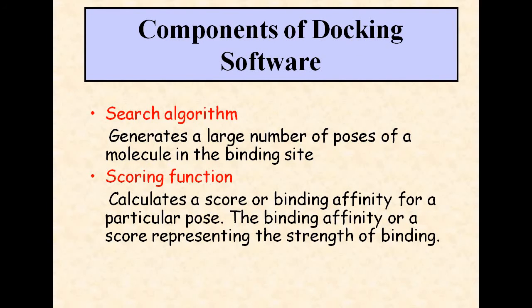There are two main components of docking software: the search algorithm and the scoring function. The search algorithm generates a large number of poses of a molecule in the binding site, and the scoring function calculates a score or the binding affinity for a particular pose, representing the strength of the binding.